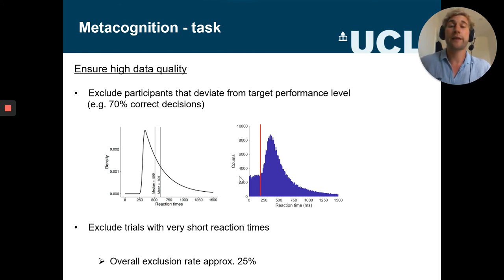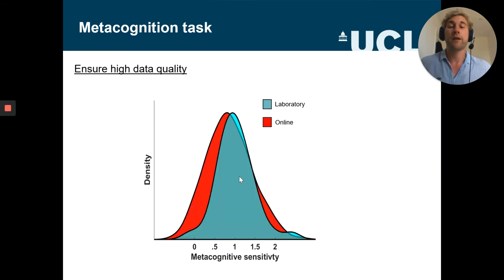And just looking at our data that we got from these online experiments and compare them to data from the lab, we actually see that distributions of metacognitive ability look very similar for lab-based tasks as well as online tasks, indicating that really through all these measures we get very high quality data online. Maybe the distribution is a bit wider online, but that's also part of the reason we took the research online, to really sample from a wider range of metacognitive abilities.